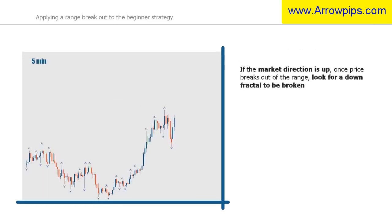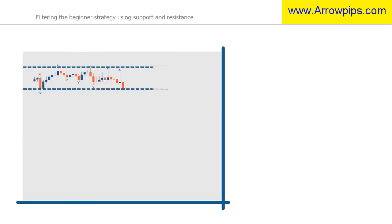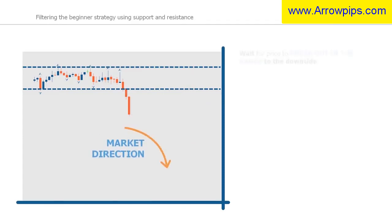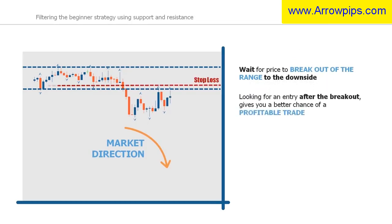So if the market direction is up, once price has broken out of the range, you can start looking for a broken down fractal, and then look to enter on a broken up fractal, and vice versa if the market direction is down. In this example, the market direction is down. Wait for price to break out of the range to the downside and then look for a short entry, as it will give you a better chance of a profitable trade.